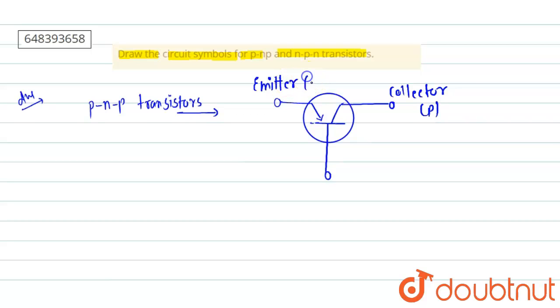And this is called base, which is of N type. So this is the symbol of PNP transistor. Now we make the symbol of NPN transistor.